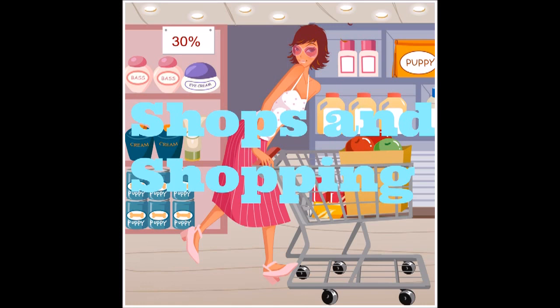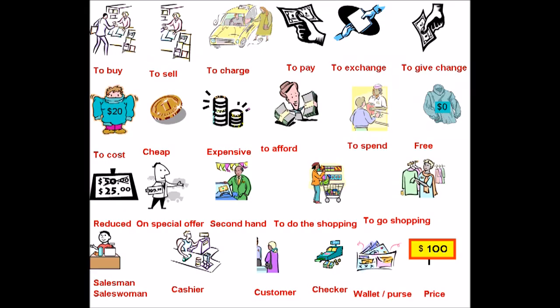A shop is where you go to buy whatever you're looking for — a plant, some food, some bread. A customer is you, the person who goes to buy something. Coins, cash and notes are what you use to pay with, and a sales assistant is the person at the shop who will help you find your product.